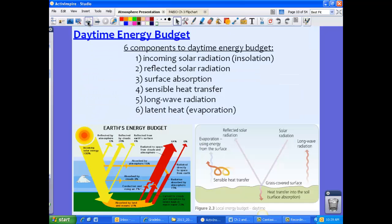So if you take a look back at all of the components, go back to the beginning, we have six components to our daytime energy budget. We have the first one being insolation. Number two is reflected solar radiation. Three, surface absorption. Four, sensible heat transfer. Five, long wave radiation. Six, latent heat evaporation. So those are our six components.